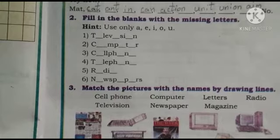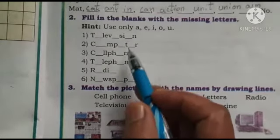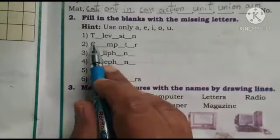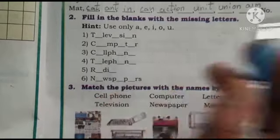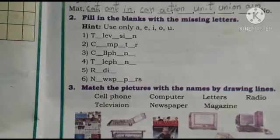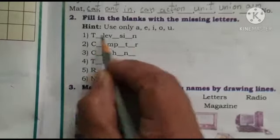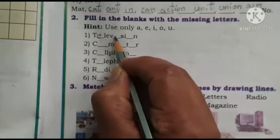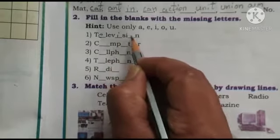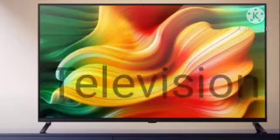You must fill in the blanks with the vowels only. The letters given are: A, L, _, V, S, I, N. Which letter must we fill in to complete the word? This is 'television' — T-E-L-E-V-I-S-I-O-N — Television.